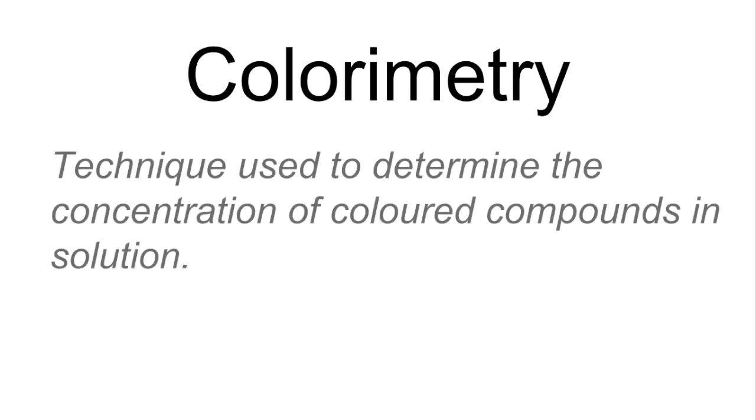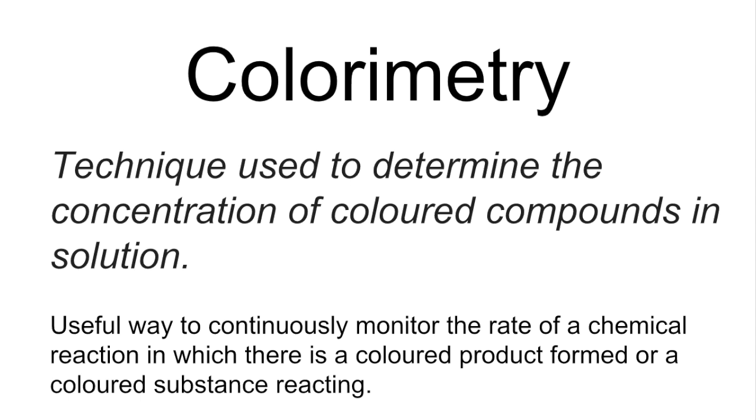In this video I'm going to look at colorimetry, just a few simple things about colorimetry and then we'll go into how we actually use it. The first thing is it's a technique used to determine the concentrations of colored compounds in solution, and it's a really useful way to continuously monitor the rate of a chemical reaction.